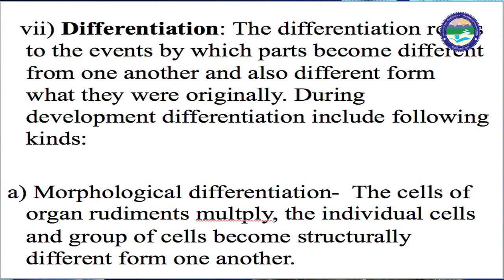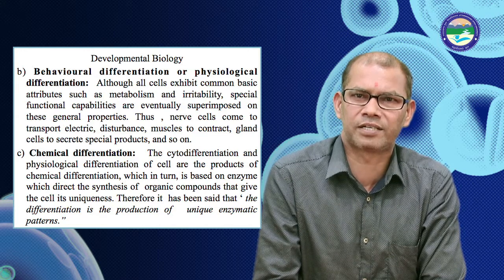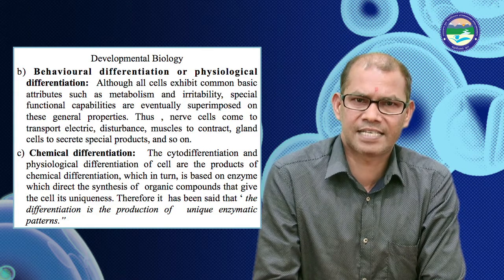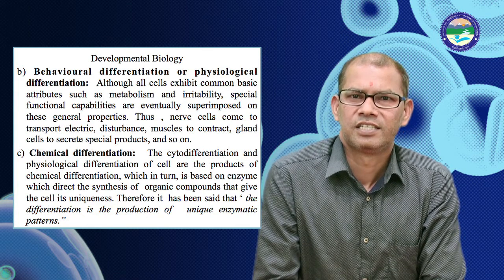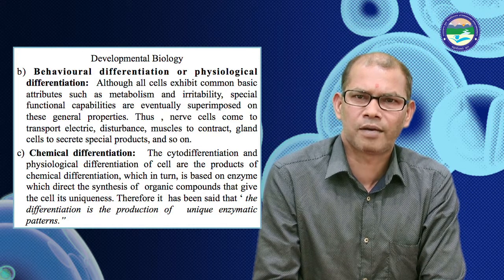Differentiation: differentiation refers to the events by which parts become different from one another and also different from what they were originally during development. Differentiation includes the following kinds. Morphological differentiation: the individual cells and groups of cells become structurally different from one another. Next: behavioral differentiation or physiological differentiation.